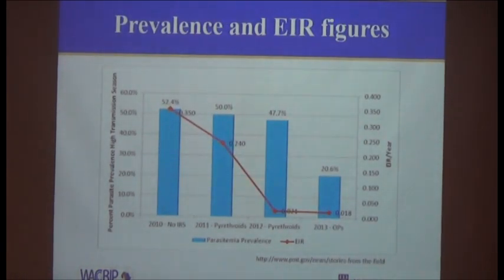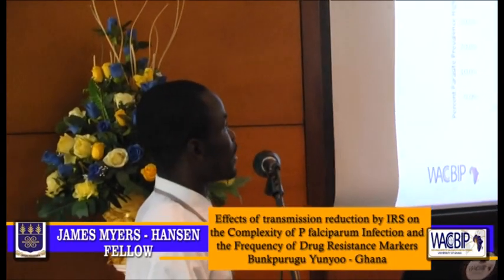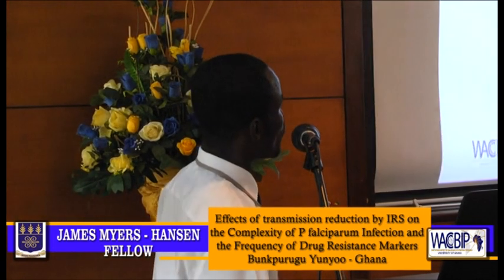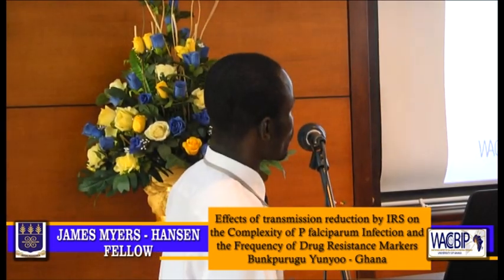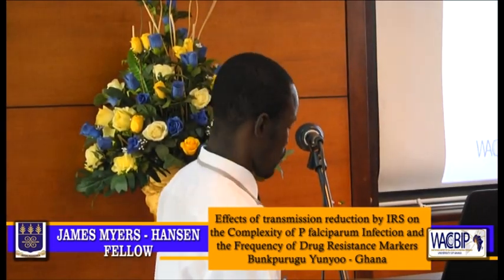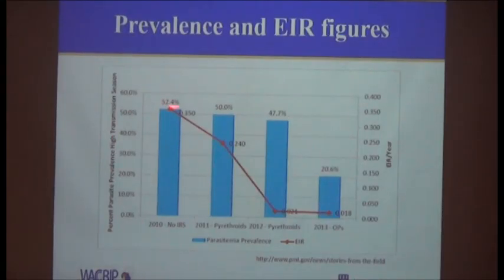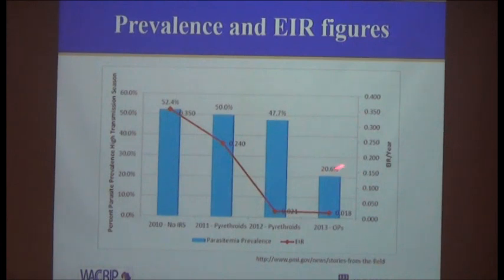These figures show the prevalence of parasitemia and entomological inoculation rates at the district. Transmission is reducing: the prevalence of parasitemia in 2010 was 52.4%, it dropped to 50%, then to 47.7% in 2012, and then to 20.6% in 2013.